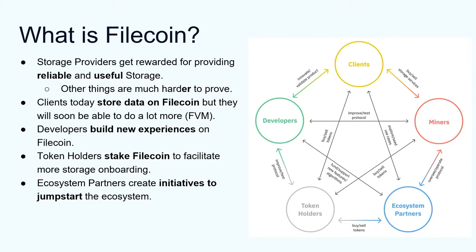A lot of the crypto econ incentive on the protocol layer focuses on reliability and usefulness. The main reason is that there are many other things we'd like to incentivize, but when you're building a crypto economic system, your hands are a bit tied by the underlying cryptography. Some things we could incentivize in a decentralized setting are much harder to prove. Clients today store data on Filecoin, but they can do a lot more with EVM smart contracts on Filecoin. And just calling out — cost is a given on Filecoin; it's subsidized by the protocol, it's cheap.